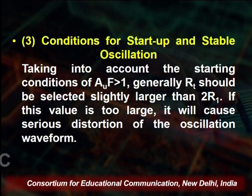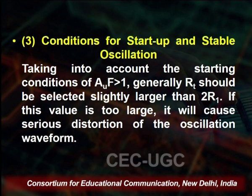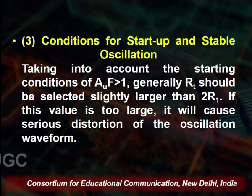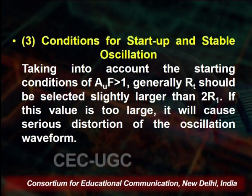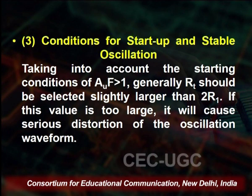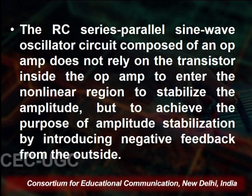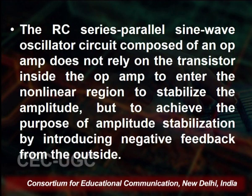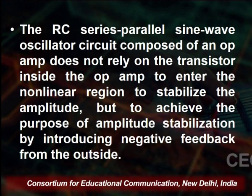For startup and stable oscillation, the condition is that loop gain Af should be greater than 1, where R₁ should be selectively slightly larger than 2R₁. A value too large causes serious distortion of the oscillation waveform. The RC serial-parallel sine wave oscillator circuit is composed of an op-amp that does not rely on the transistor inside the op-amp entering the non-linear region to stabilize the amplitude, but achieves amplitude stabilization by introducing negative feedback from the outside.